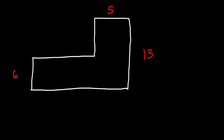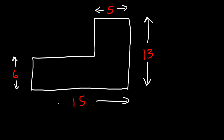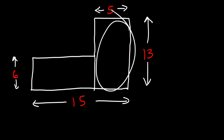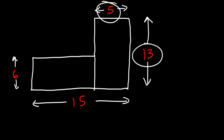Now what if you have a composite figure? Let's say this side is 6, this is 5 units long, this side is 13, and this side is 15. Using what you know, calculate the area of this composite figure — feel free to pause and try it. We need to break this figure into two rectangles. The area of the first rectangle is 5 times 13, which is 65.